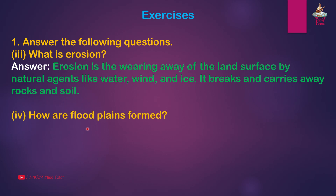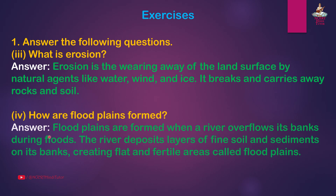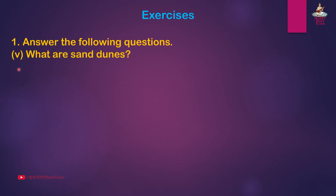Question 4: How are floodplains formed? Answer: Floodplains are formed when a river overflows its banks during floods. The river deposits layers of fine soil and sediments on its banks, creating a flat and fertile area called floodplains.